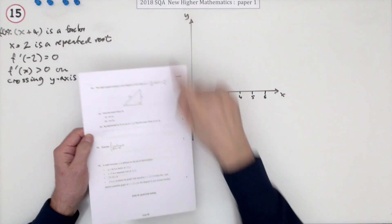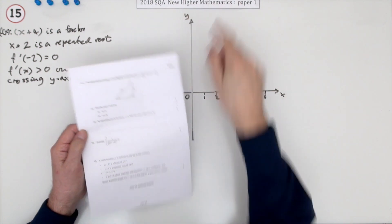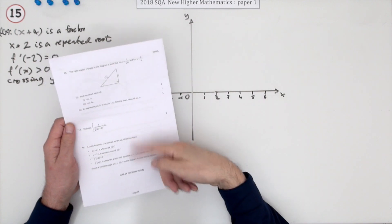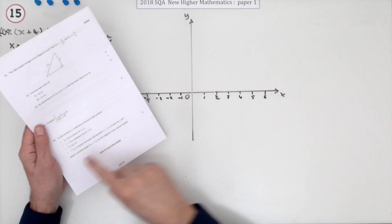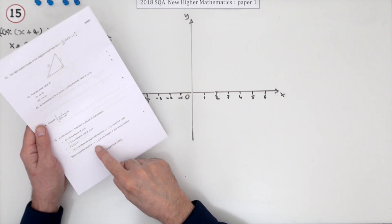So number 15 then, the last question in the 2018 SQA Higher Maths Paper 1, and it's just draw a picture. You don't have to show any calculations at all for these four marks. Sketch a possible graph for this function.